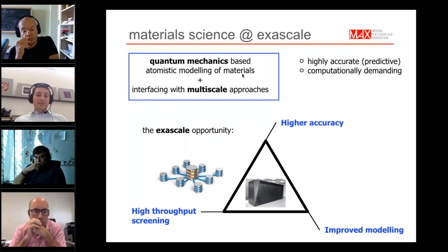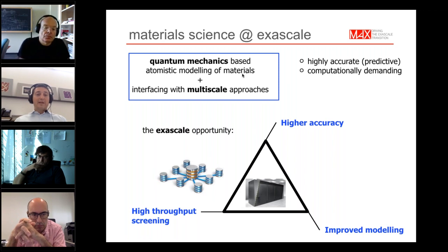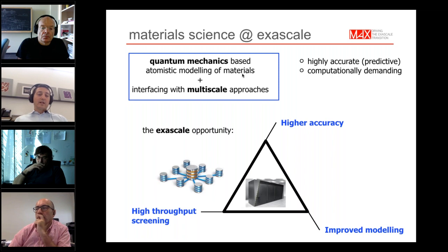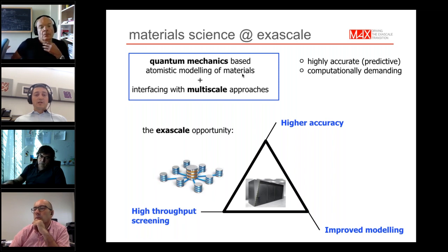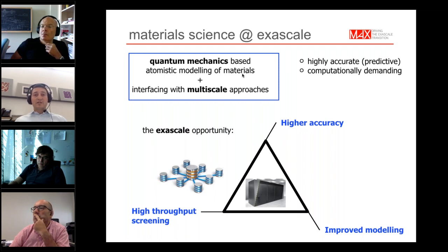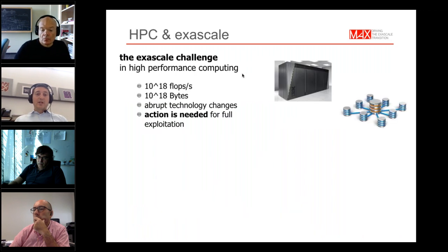There is also a third avenue: running many calculations to perform high-throughput screening of materials properties. We may want to optimize some material with a given property in mind by screening thousands or tens of thousands of materials. This is now feasible and efficient, and will be discussed in detail later.